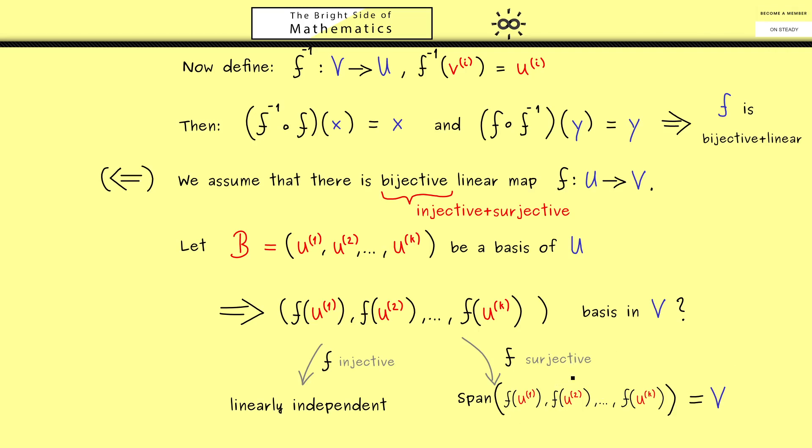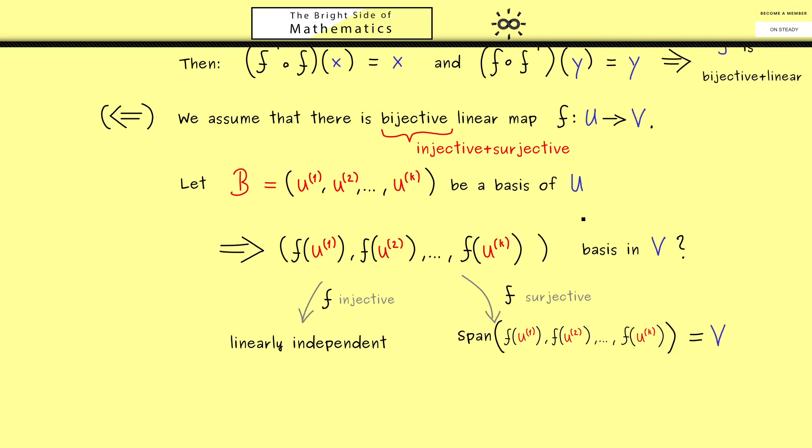Okay and there you see this is all what we need we have the linear independence and this generating claim. And this is exactly the definition of a basis. And now we see the numbers of elements is the same hence the dimension is the same. So you see we have written down the proof of this direction as well so we have proven the whole equivalence.